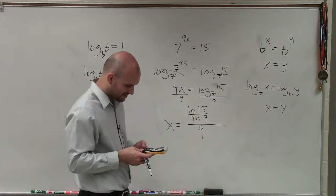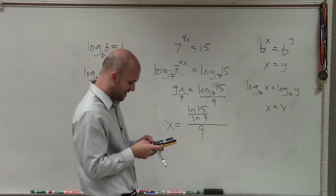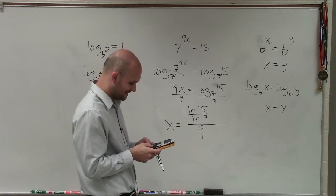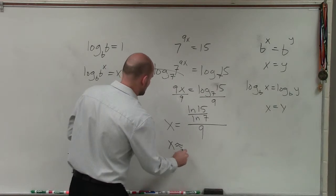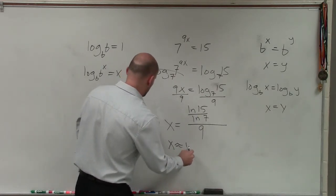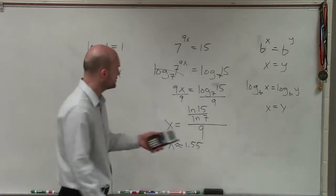So what I'm going to do is I'm just simply going to take ln of 15 divided by ln of 7. Then I'm going to take that value and divide it by 9. Therefore, approximately, x is going to equal 1.55 as I round it to the 100th digit.